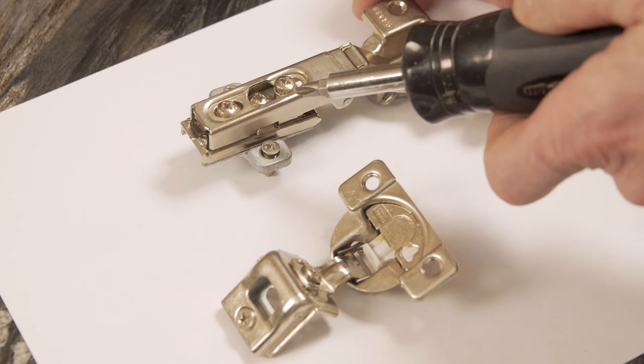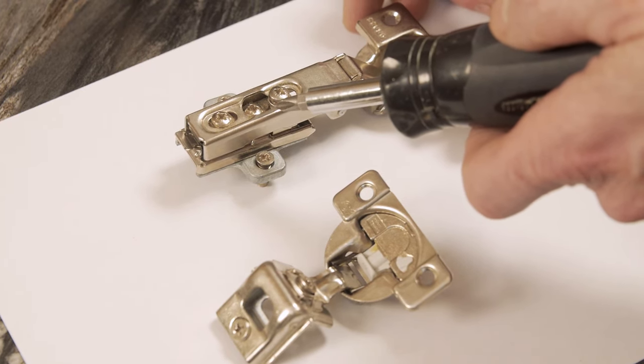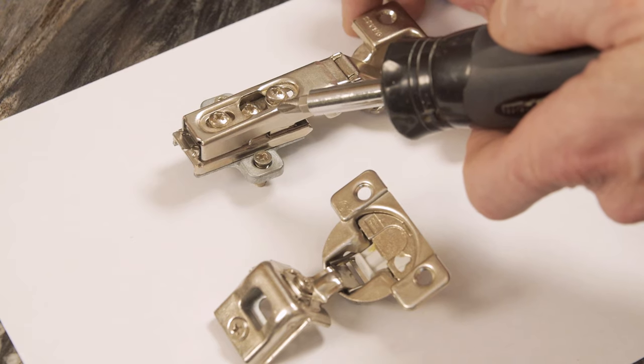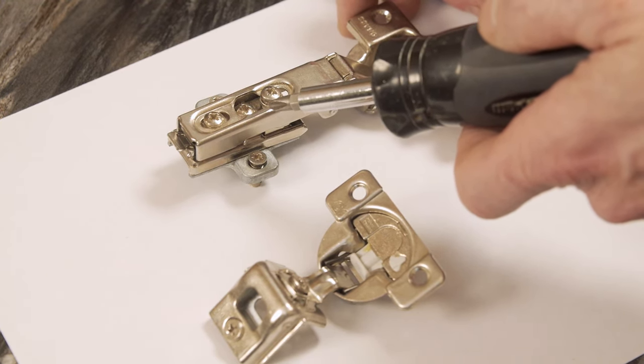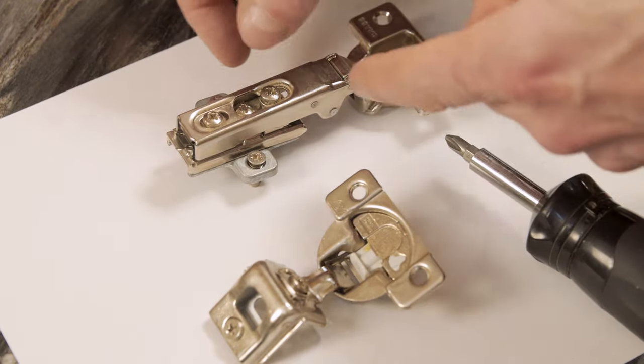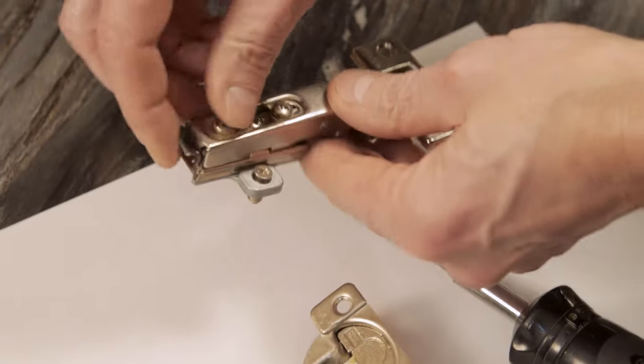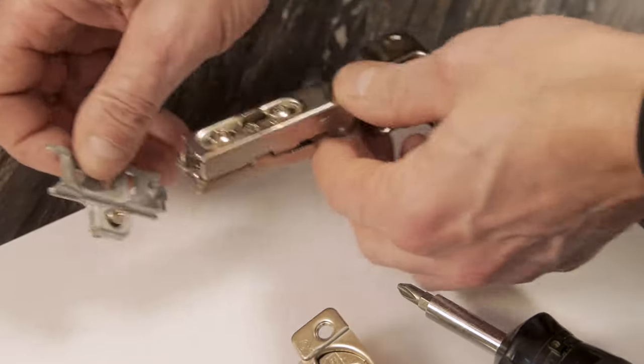This type is used in a frameless cabinet, typically your contemporary style cabinet coming out of Europe. Flush doors often are used like a high gloss flush door, but it could be any type of door. I'm going to unclip this base plate just so you can see. Here's a clip type and that just releases the base plate.